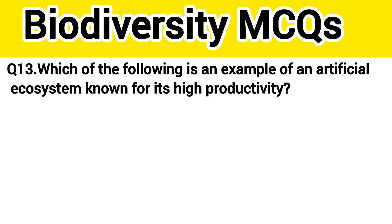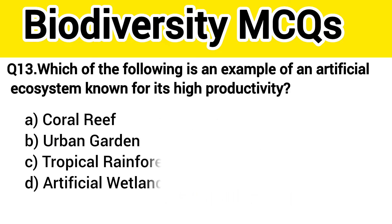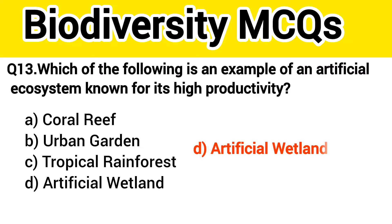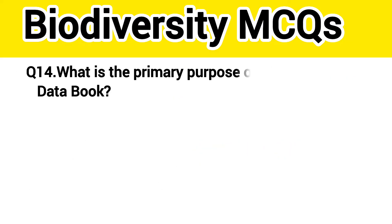Question number 14. Which of the following is an example of an artificial ecosystem known for its high productivity? The right answer, option D: Artificial wetland.